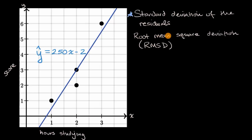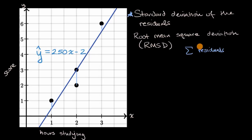Sometimes it's called root mean square error. What we're going to do is, for every point, calculate the residual, then square it, and add up the sum of those squared residuals. Then we're going to divide that by the number of data points we have minus two.